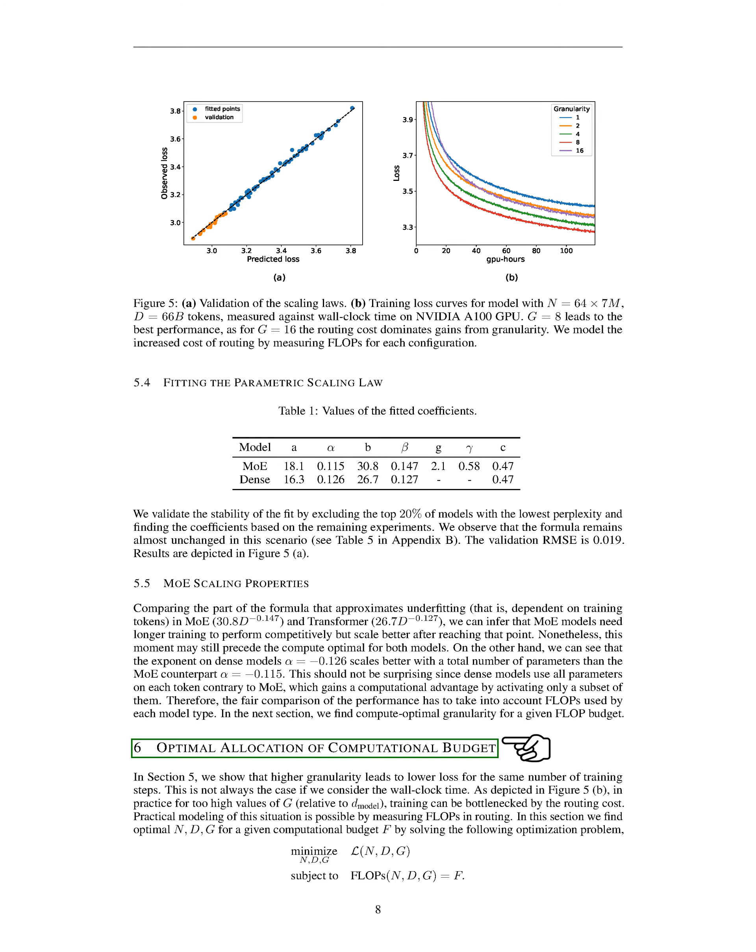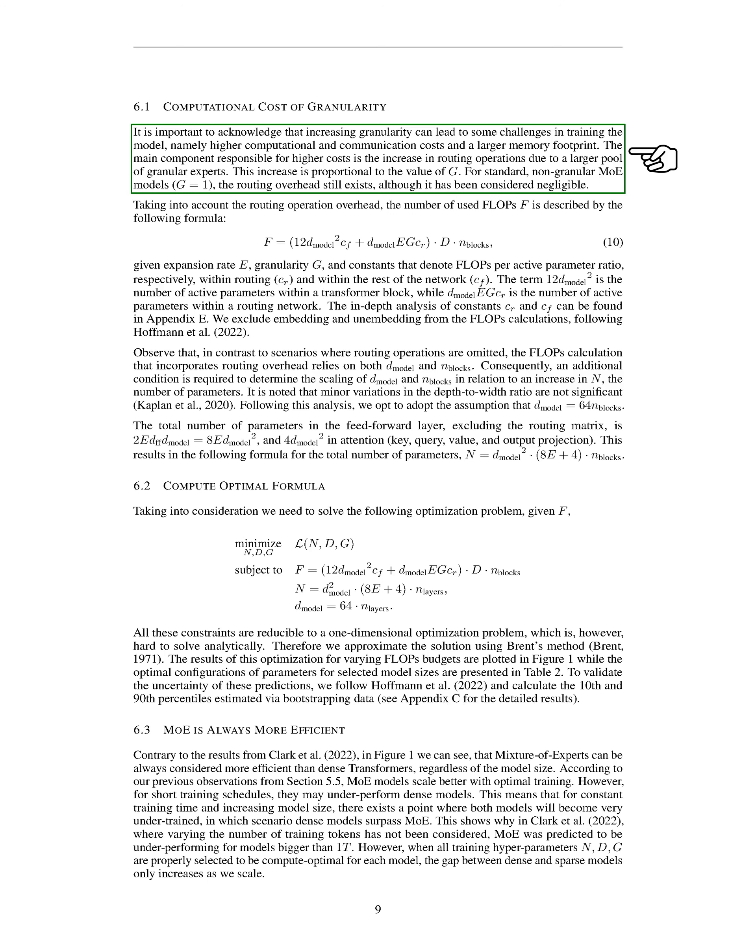Section: Optimal Allocation of Computational Budget. In this section, we discuss how allocating the computational budget optimally can lead to better performance in training models. We've found that using more detailed or granular approaches in training can reduce errors, but this doesn't always translate to faster training times. Specifically, when the granularity level, denoted as G, is set too high relative to the model's dimension, the training process can slow down due to increased routing costs. We can measure these costs in terms of floating-point operations needed for routing.